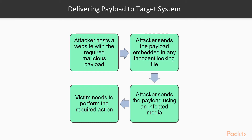As we have seen, if the target system is not in the same network as that of the attacker, then the attacker cannot reach the target system directly. Some techniques for delivering the payload to the target system are: first, the attacker hosts a website with the required malicious payload and sends it to the victim. Then, the attacker sends the payload embedded in any innocent-looking file, such as DOC, PDF, or XLS, to the victim over email.